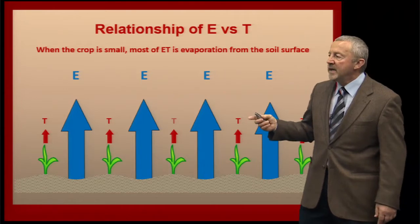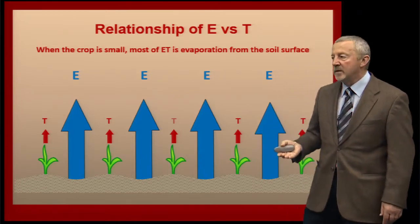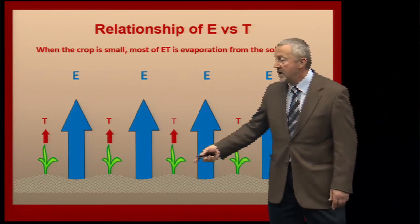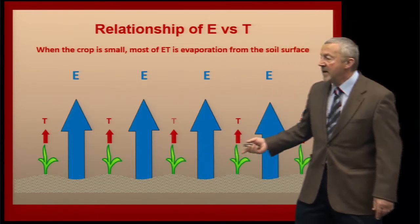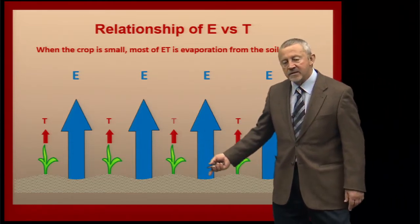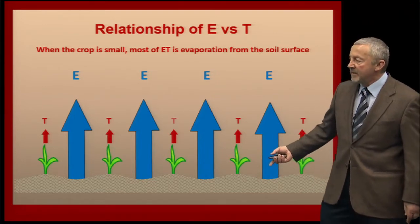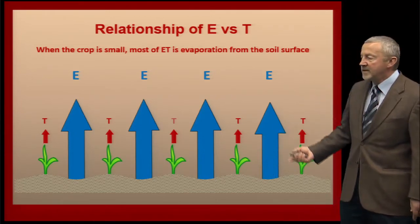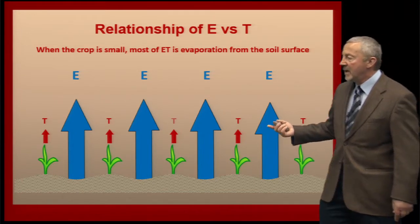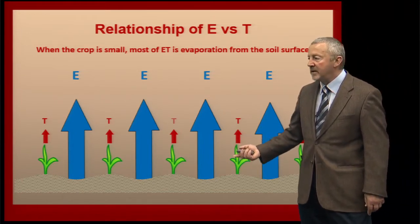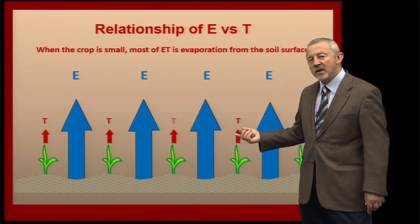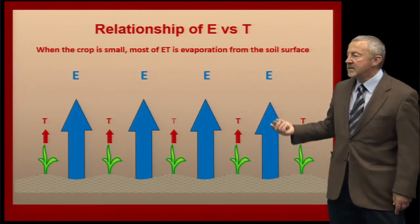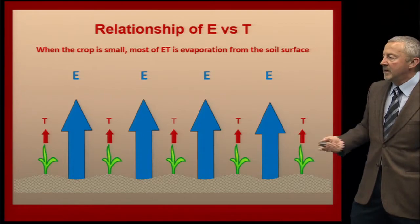As we go through the growing season, when the crop is really small — whether we're looking at soybeans or corn — early on these plants are very small. There's not a whole lot of leaf area for water to come out of, and there's a large area of soil surface exposed to evaporation loss. If we have residue on the surface, that would reduce the amount of evaporation coming right off the soil. Because there's very little leaf area, the transpiration of water that moves up through the plant roots and out through the stomata is small relative to soil evaporation loss.